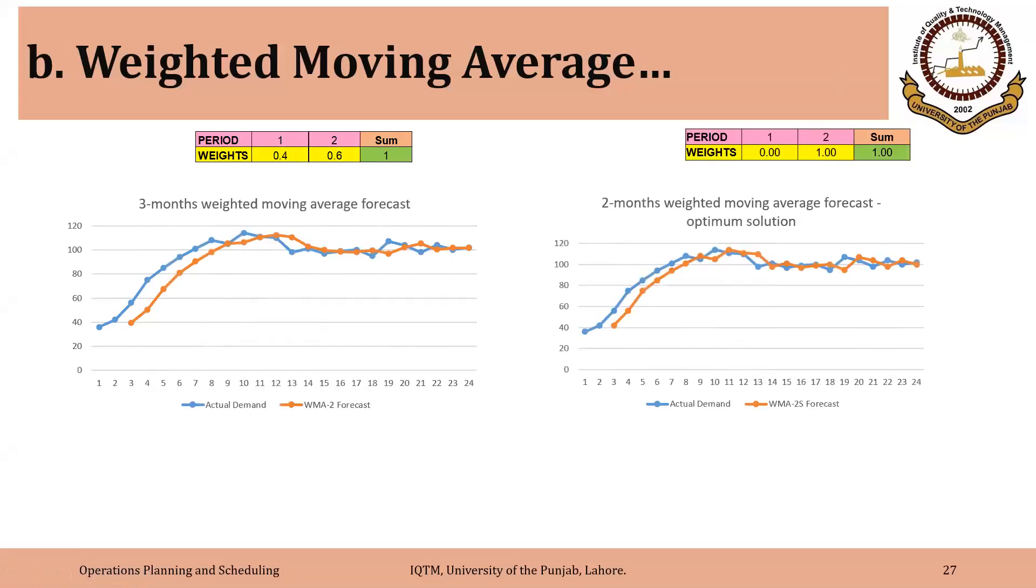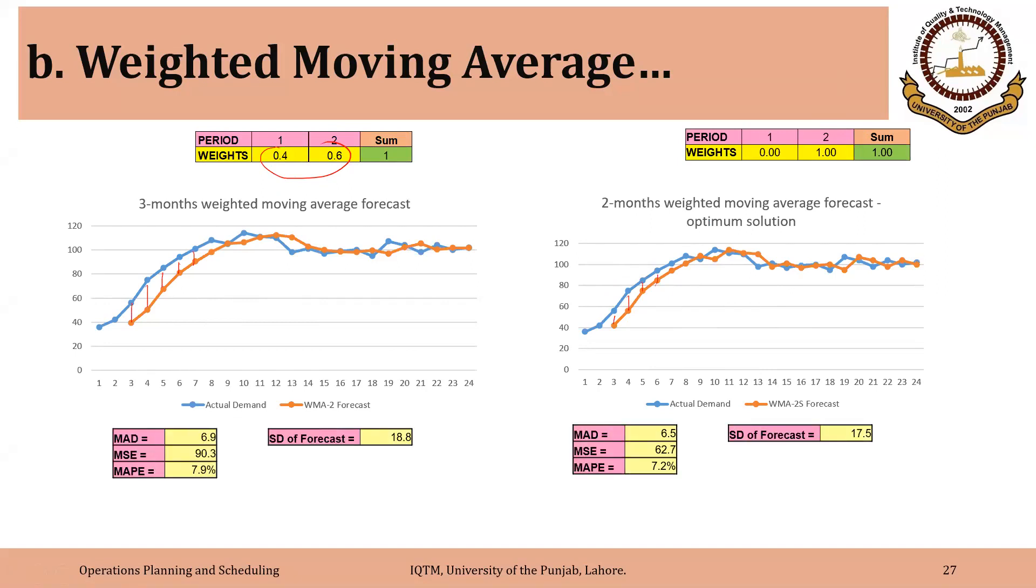Now, if you compare the results, you can see that once we assign the weights arbitrarily 0.4 and 0.6, you can see that the error, the difference of these two values seems to be larger than once we found the optimum weight. So graphically, you can visualize that the error is less with the optimum weights. And if we look at the specific values, then MAD for arbitrary weights was 6.9, it was 6.5 for the optimum weights. And you can look for MSE and MAP. They are smaller for optimum weights than for the arbitrary weights.